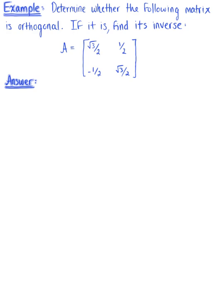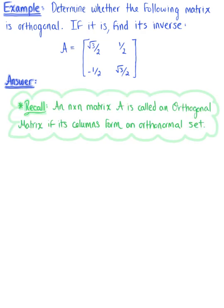Determine whether the following matrix is orthogonal. If it is, find the inverse of this matrix. Here we have a two by two matrix A. Let's recall the definition for an orthogonal matrix: an n by n matrix A is called an orthogonal matrix if its columns form an orthonormal set. So we need to check two things — that the columns of matrix A are orthogonal to each other, and that these columns are also unit vectors.